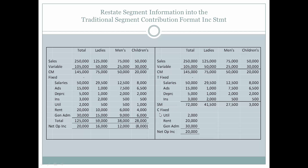After that, we will deduct common fixed expenses, which are common to the entire store and will continue even if the children's department is dropped. So utility costs will still continue, the rent will still continue, as well as general and administrative costs in this example.